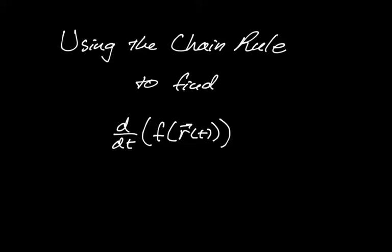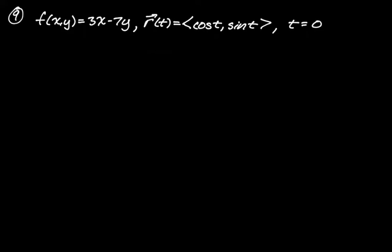In this video we're going to be using the chain rule to find d/dt of f of r(t), where r(t) is a vector-valued function. First up we have question number nine: f(x,y) = 3x - 7y, and our path r(t) = (cos t, sin t), which is the unit circle.